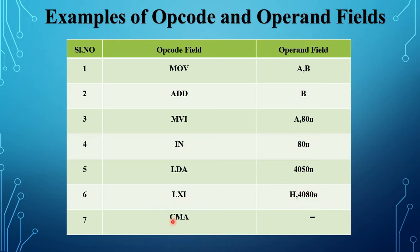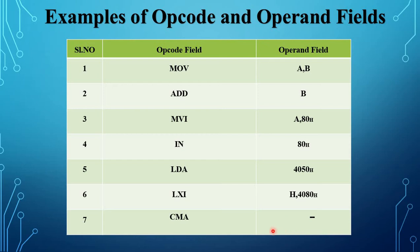The next instruction is CMA — complement accumulator content. Here there is no operand field. To summarize: the first two instructions specify the name of the register; the third specifies 8-bit data; the fourth specifies an 8-bit address; the fifth specifies a 16-bit address; LXI H, 4080 specifies 16-bit data; and CMA has an empty operand field. These are the examples of opcode and operand field.